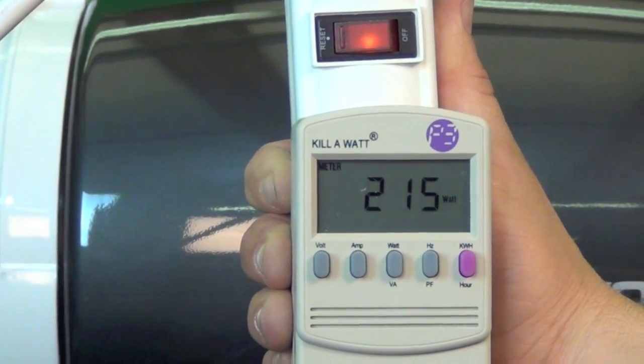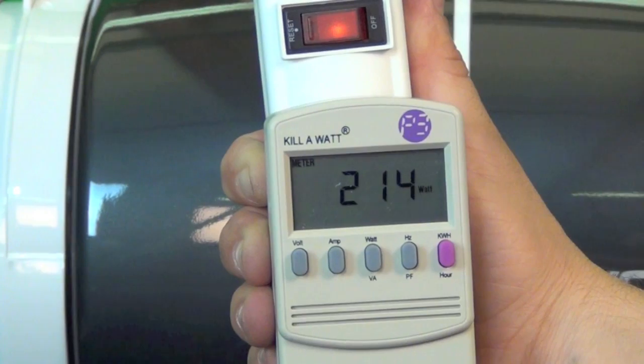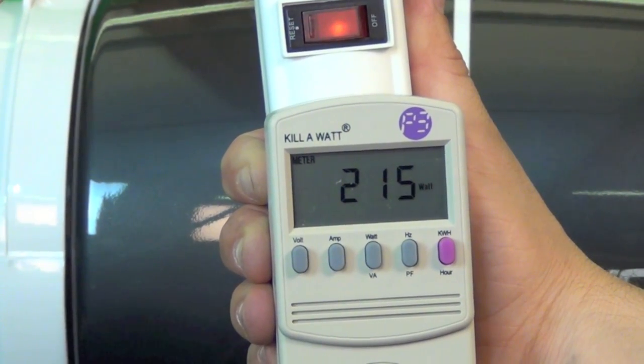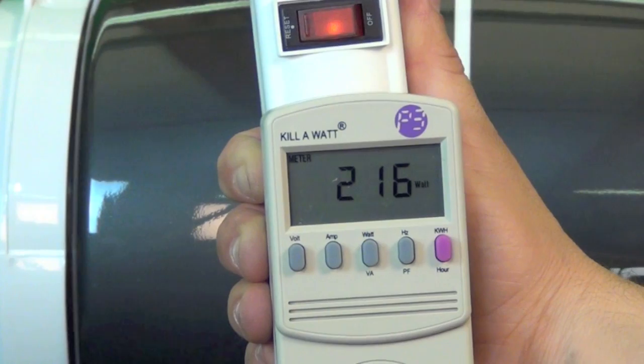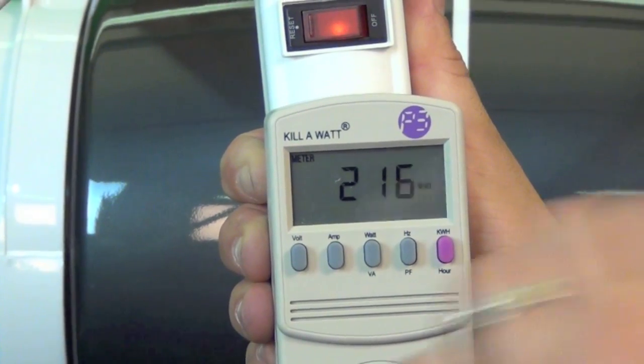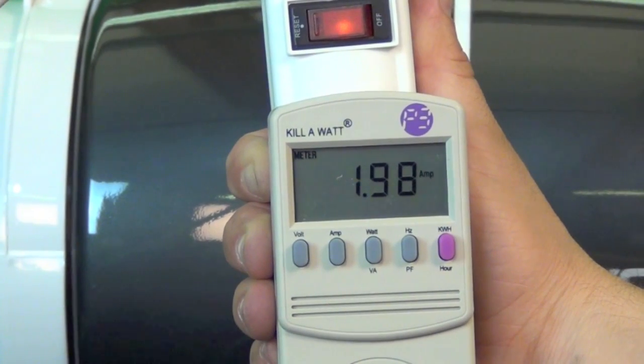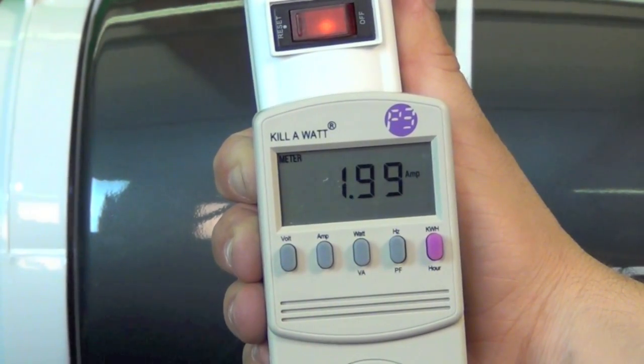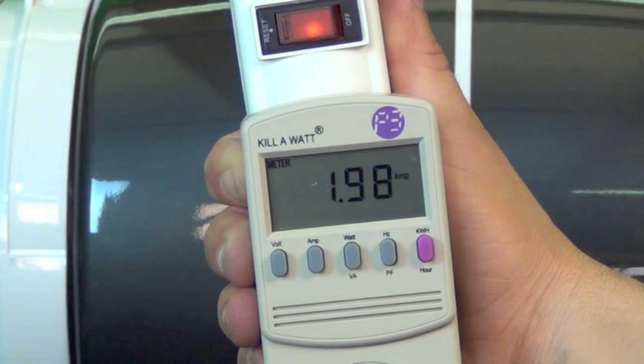So it looks like our 8 inch Vortex is running about 214 watts, as compared to our Rebel at 222, and it's running about 1.98 amps. So it seems that the Vortex, in comparison to the Rebel with their CFM output, are about the same in their electrical performance as well as their amperage draw.